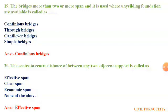The twentieth and last question: the center-to-center distance between any two adjacent supports is called — fill in the blank. The first option is effective span, second is clear span, third is economic span, and fourth is none of the above. The correct answer is effective span.